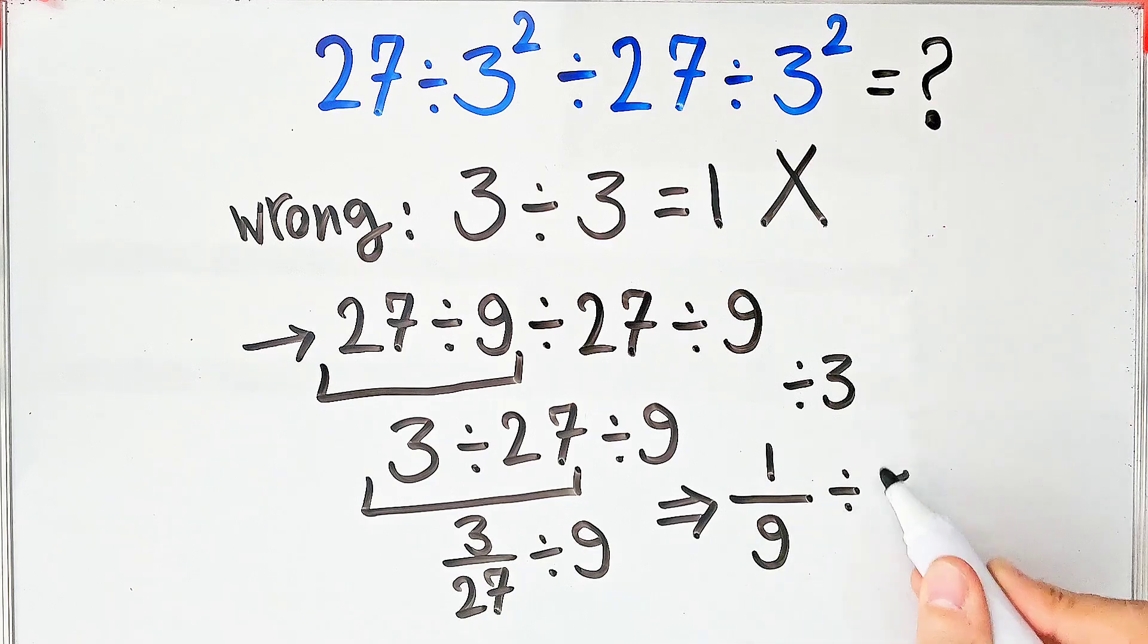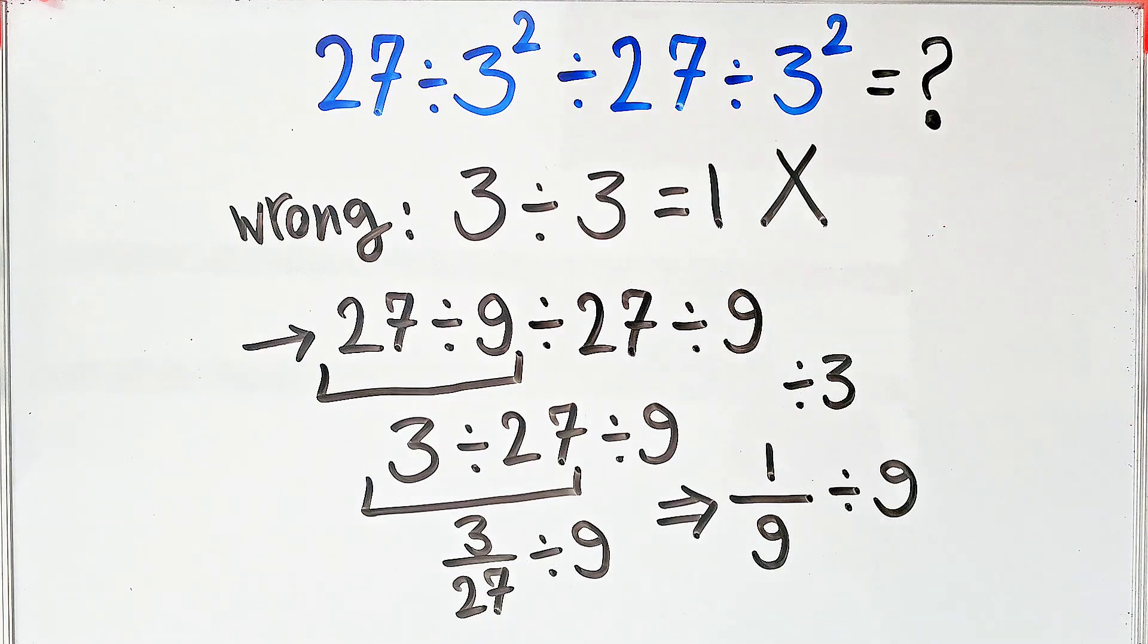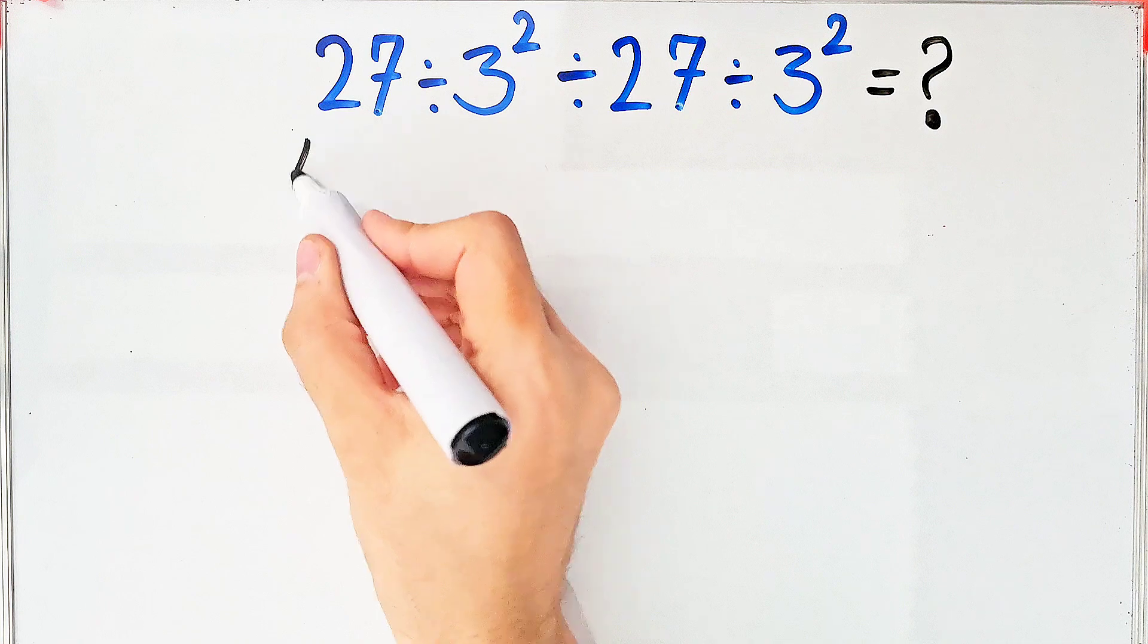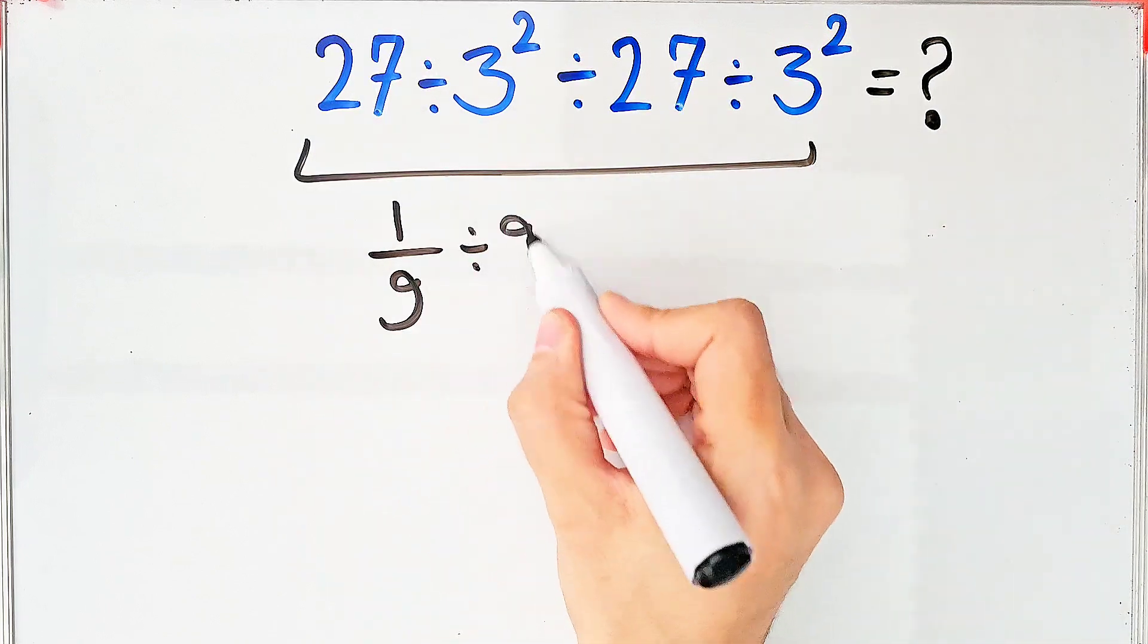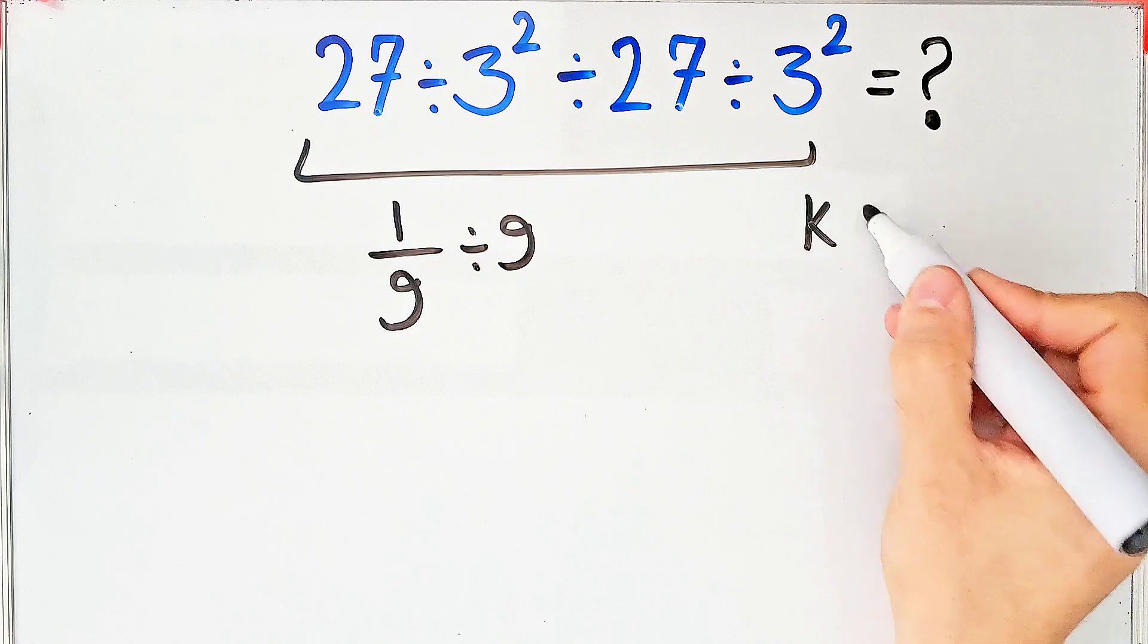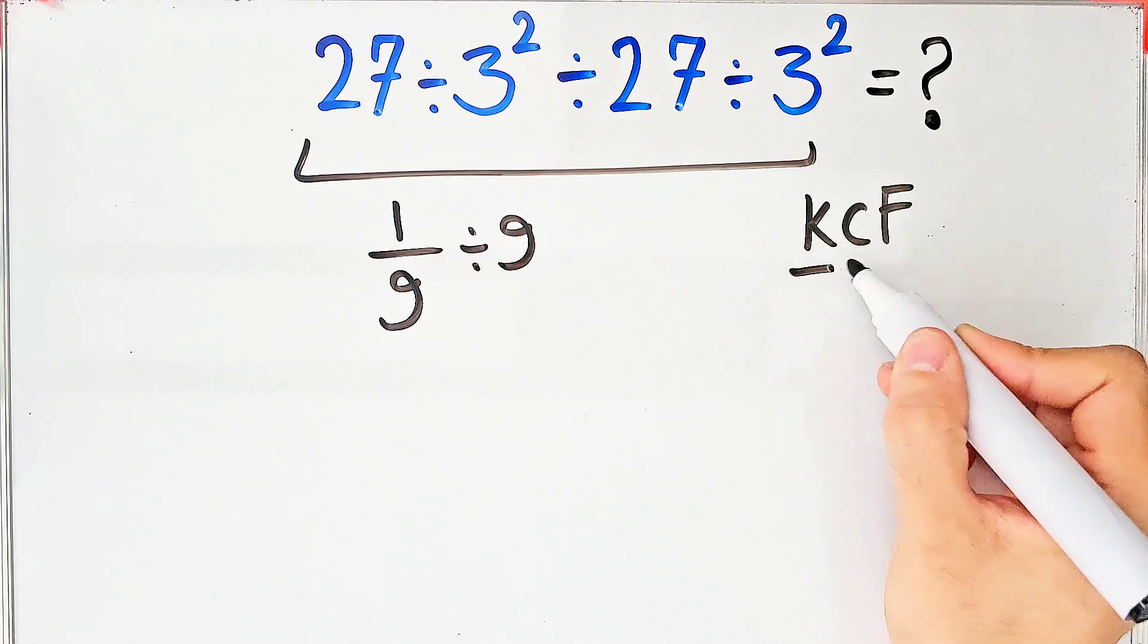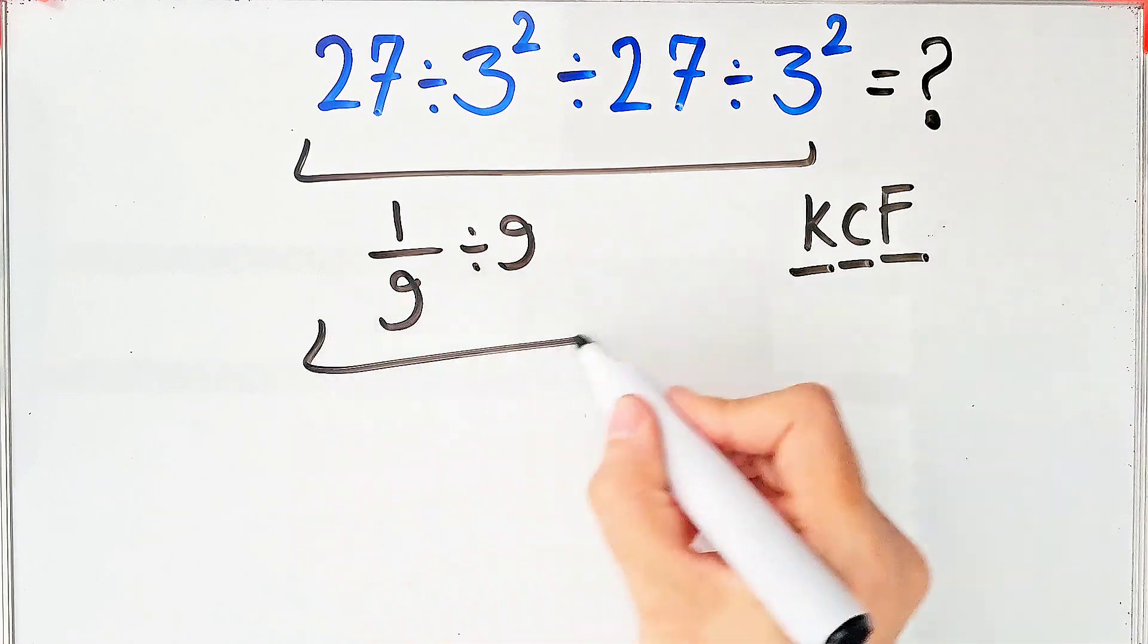Okay guys, let's solve and simplify this part step by step together. We have 1 over 9 divided by 9. To solve this part, we need to follow the KCF rule. K stands for keep, C stands for change, and F stands for flip.